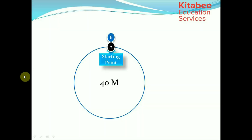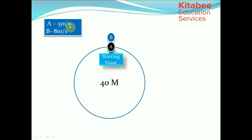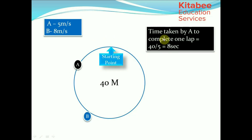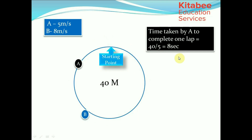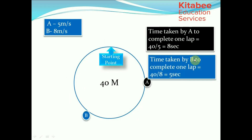Let's say we have a circular track of length 40 meters and there are two runners A and B with speeds of 5 meters per second and 8 meters per second respectively. The time taken by A to complete one lap would be 40 divided by 5, that is distance by speed, which comes out to be 8 seconds. Similarly, the time taken by B would be 40 divided by 8, which equals 5 seconds.